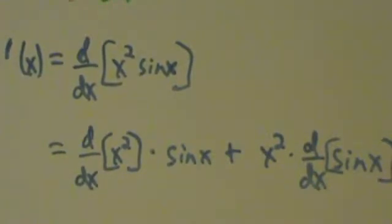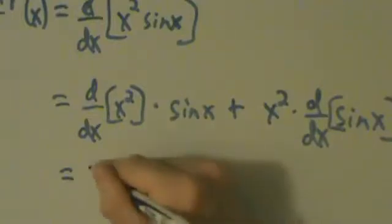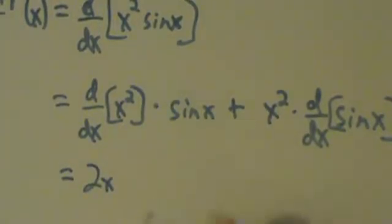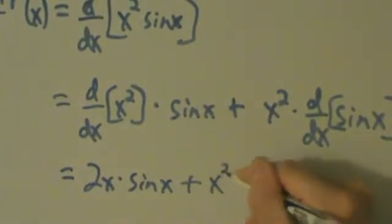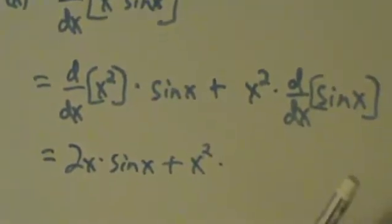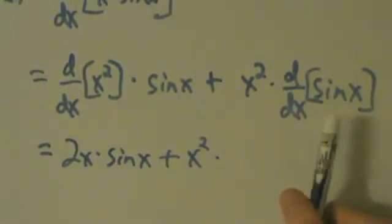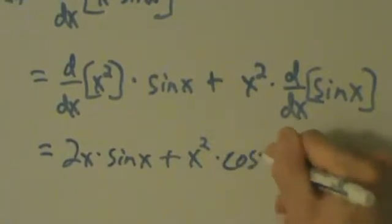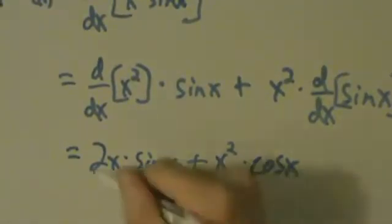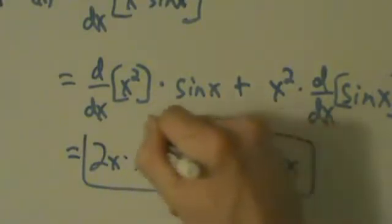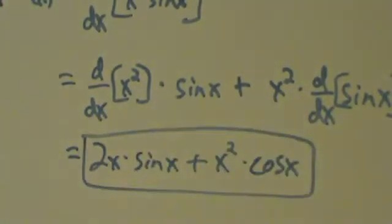So now we go ahead and simplify. Well, d/dx of x squared we know is just 2x, so we have 2x times sine of x, and then plus x squared times d/dx of sine of x, which is just cosine of x. And that's actually our answer — there's really not much more we can do to simplify that. So that's the derivative of x squared times sine of x.